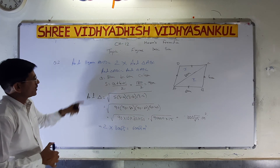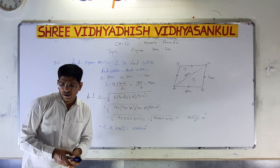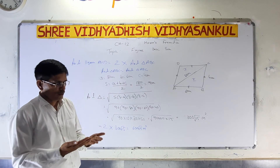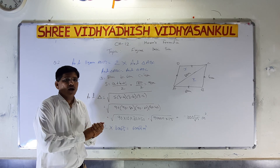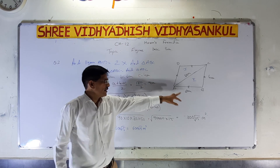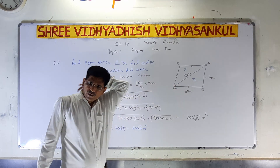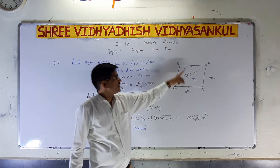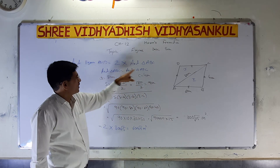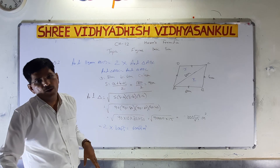So the area of the parallelogram is 600 root 15 meter square. It is also an NCERT-based sum. When one diagonal and two sides of a parallelogram are given — and we know opposite sides are equal — we find the area of one triangle using Heron's formula, then multiply by 2 to get the area of the parallelogram.